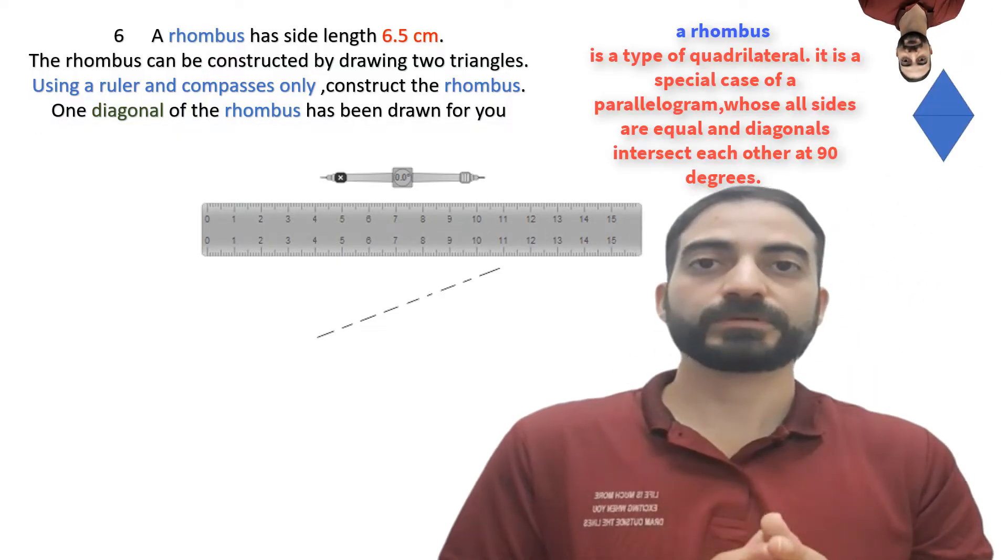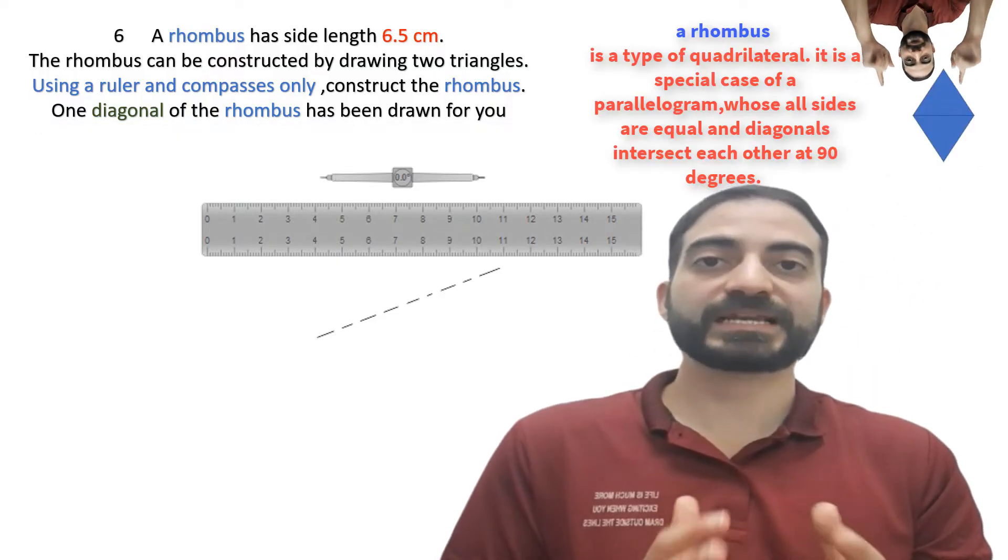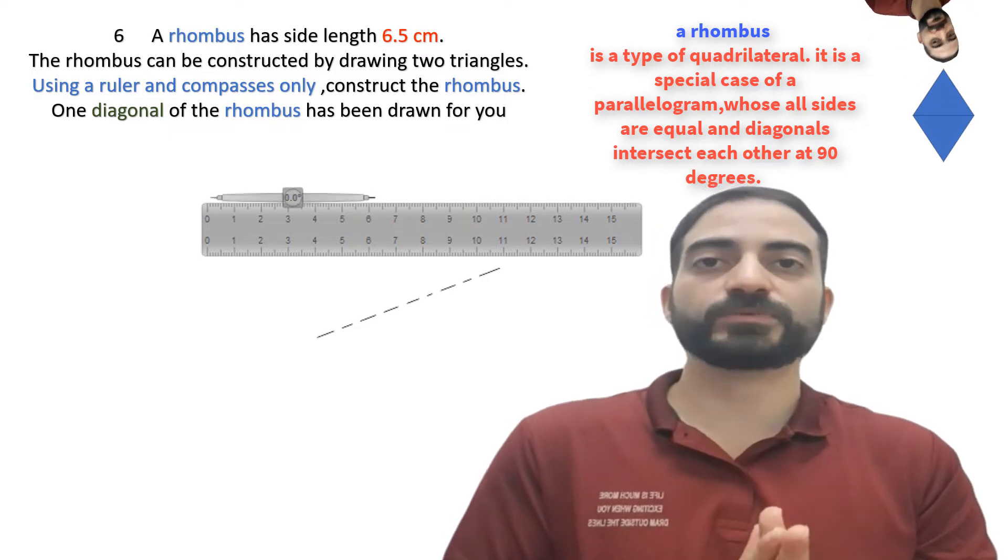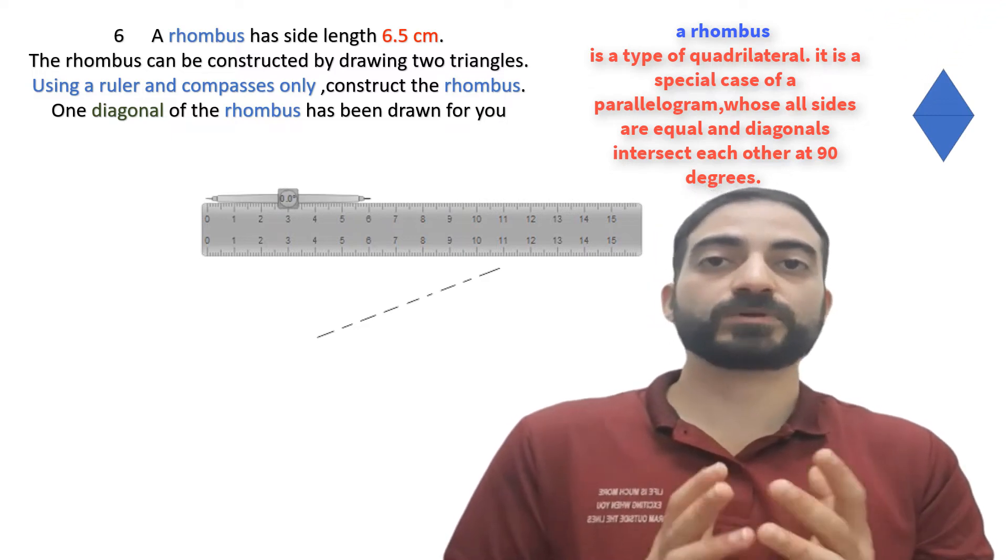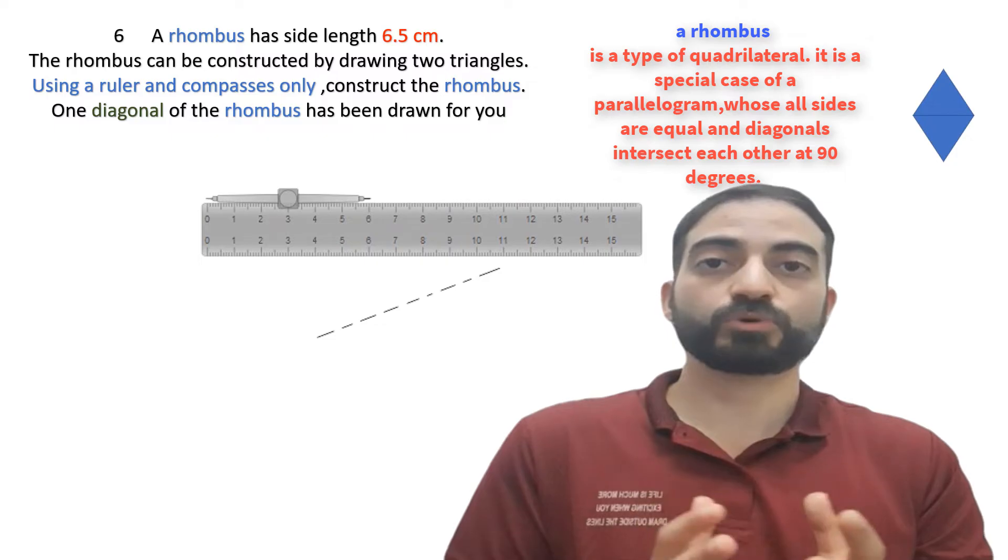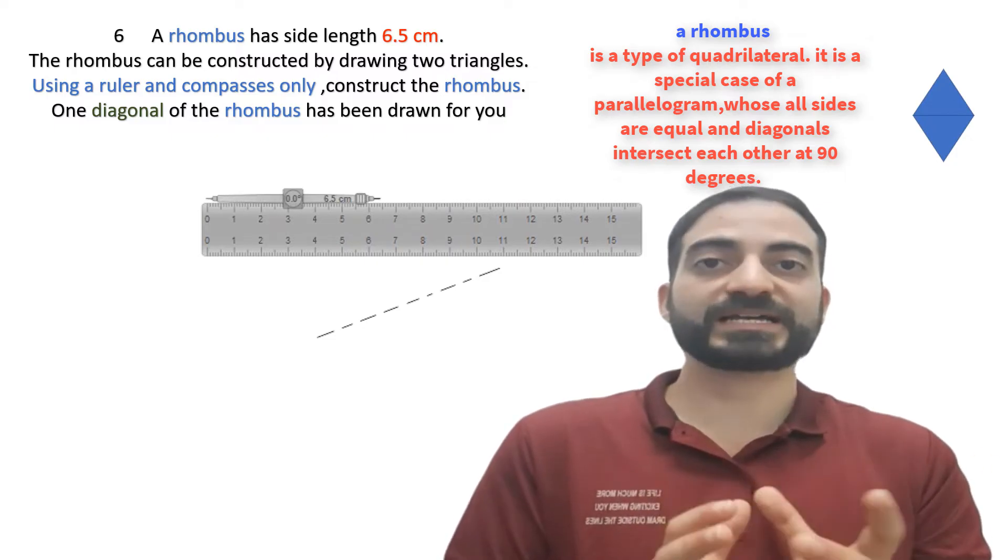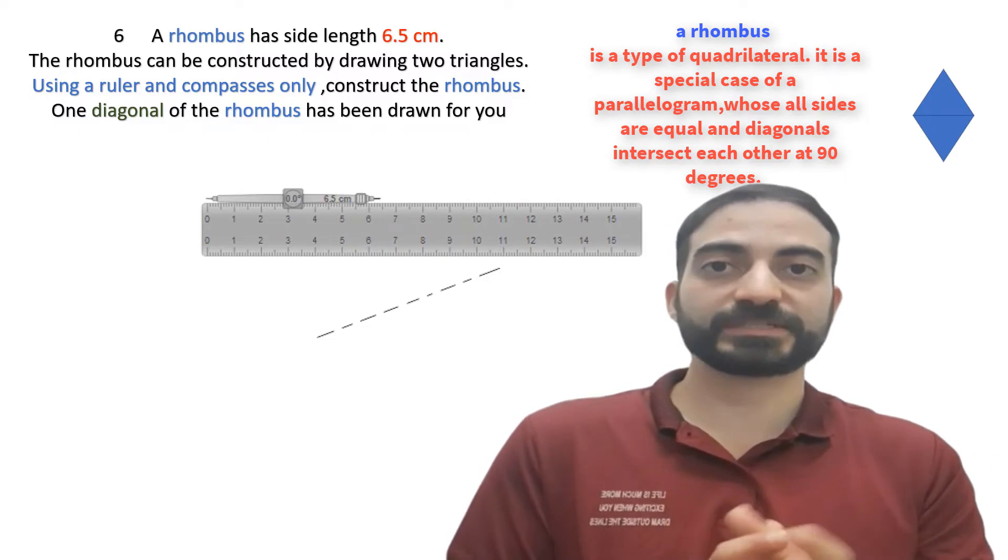We must get this shape but it has a side length of 6.5 cm. As a rhombus has all sides equal, we must open the compass to a size of 6.5 cm.